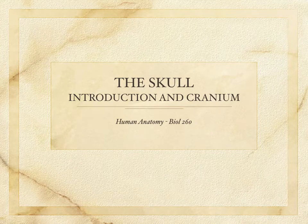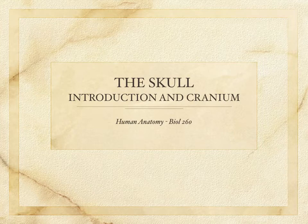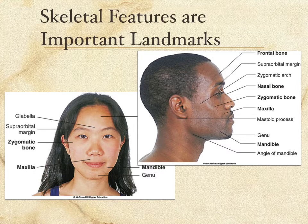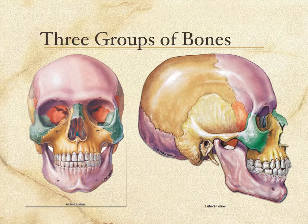This is a study of the human skull. In this part of the lecture, I will introduce the skull and talk about a portion called the cranium. Skeletal features are always important landmarks for finding softer tissues in the human body. The images here point out a number of features you will learn that become very important in a medical setting. The first thing to know is that we can divide the skull into three groups of bones.